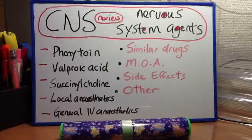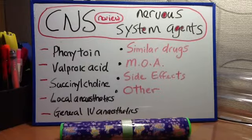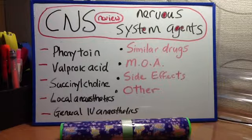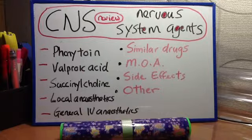Valproic acid. MOA: increases GABA concentrations and has effects on sodium and potassium conductance across the neuronal cell membrane. Clinical uses: generalized tonic-clonic seizures, myoclonic seizures, absence seizures, and treatment of mania. Side effects include hepatotoxicity and neural tube defects.